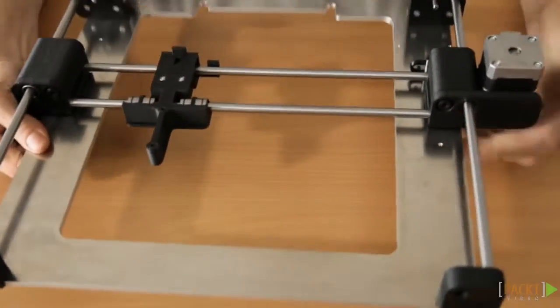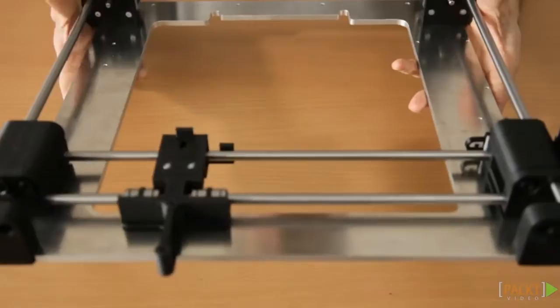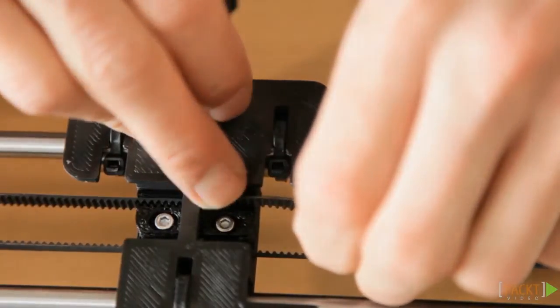In the previous video you made the XZ plate. In this video you will put the timing belt onto the X axis.